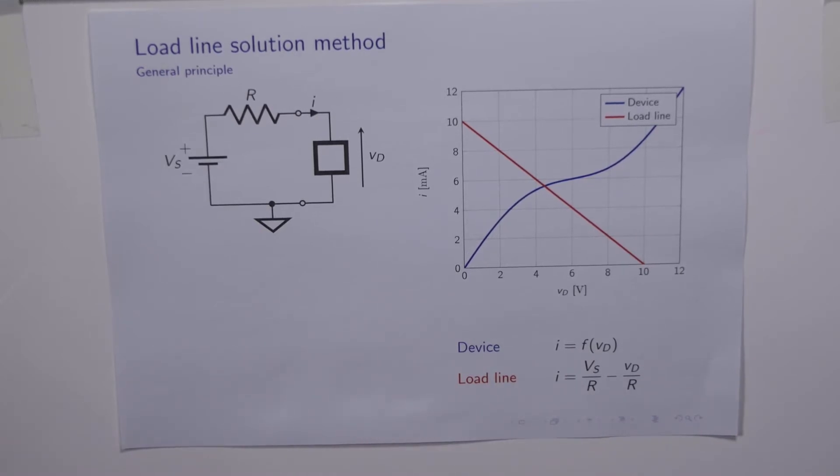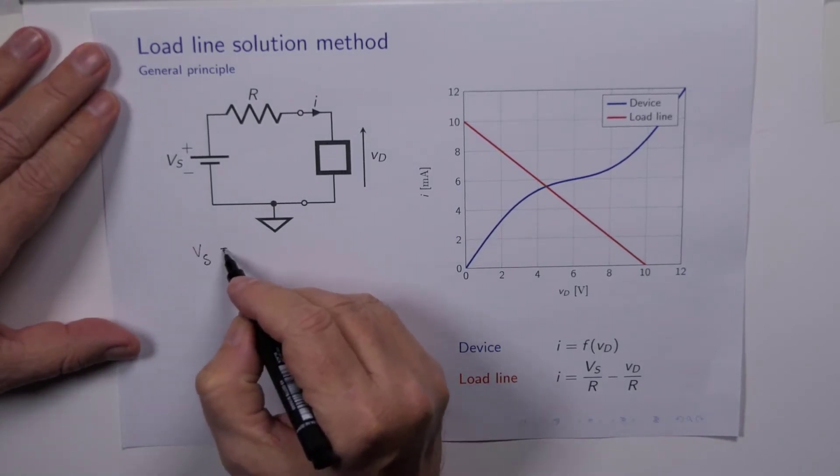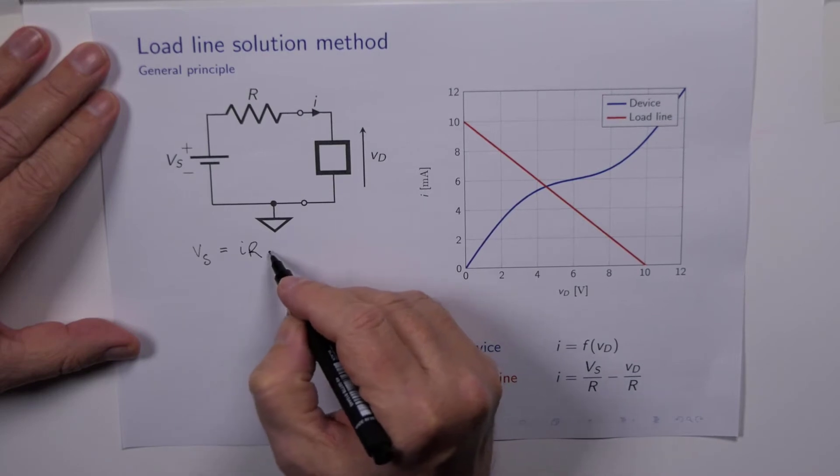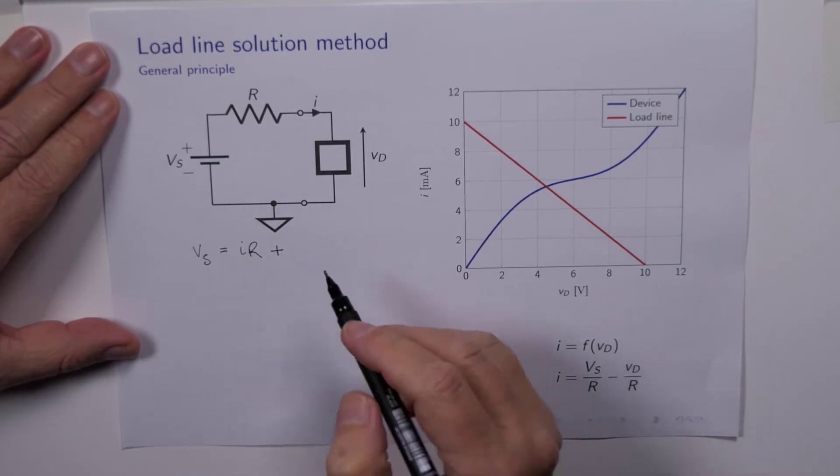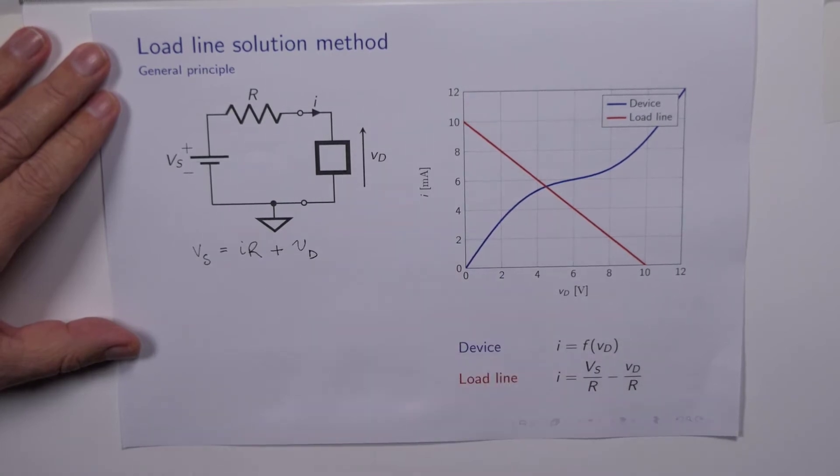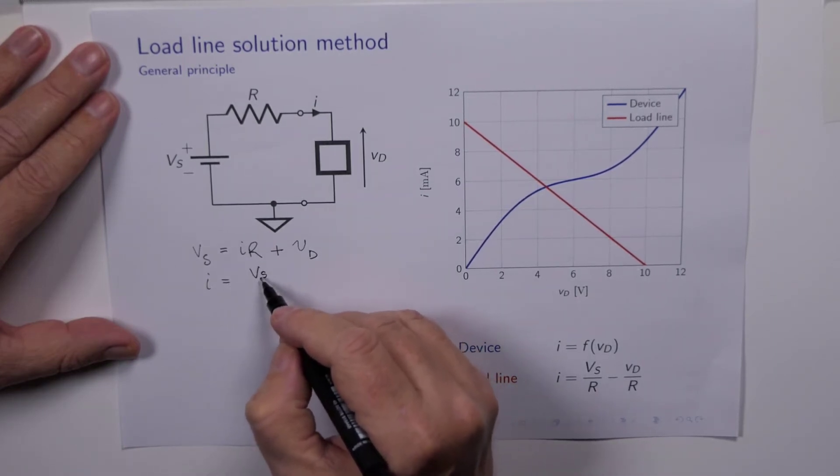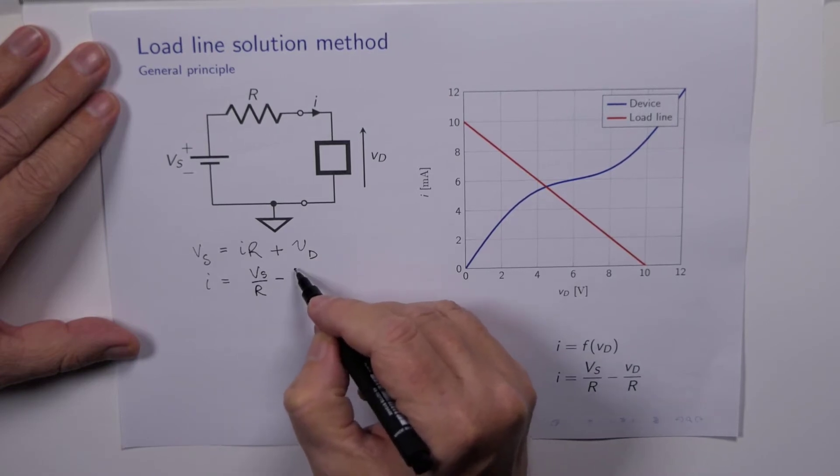Well, we know that Kirchhoff's voltage law applies, so we can write down an equation for this circuit. We know that the source voltage Vs is equal to I times R plus the device voltage Vd. And it's no problem to rearrange this equation for I. So we can write down I equals Vs over R minus Vd over R.